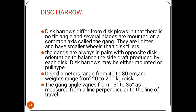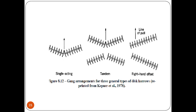The disc harrow differs from the disc plow in that there is no tilt angle and several blades are mounted on a common axis called the gang. They are lighter and have smaller discs than disc tillers. The gangs are always in pairs with opposite disc orientation to balance the side draft produced by each disc. The disc harrow may be either mounted or trail type. The diameter ranges from 40 to 80 centimeters, weight ranges from 20 to 200 kg per disc, and the gang angle varies from 15 to 35 degrees as measured from the line perpendicular to the line of travel. You can see the gang arrangement for single acting, tandem, and right-hand offset types.